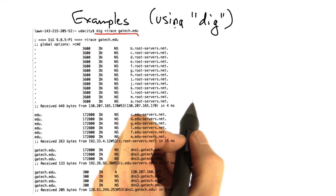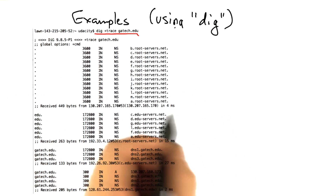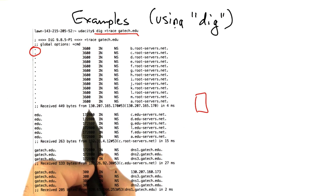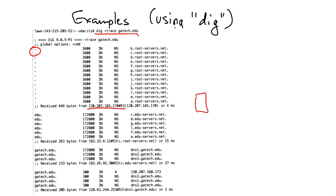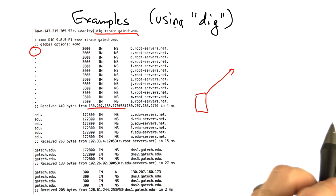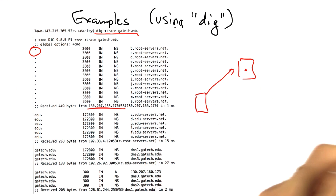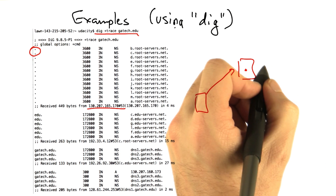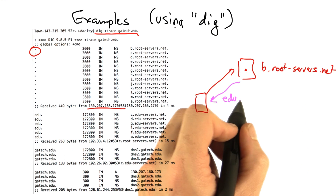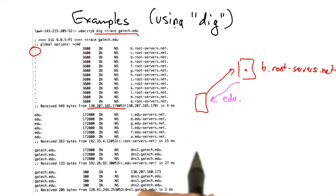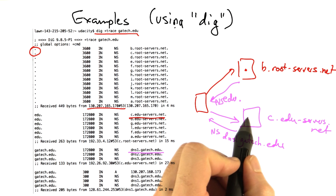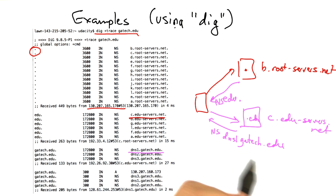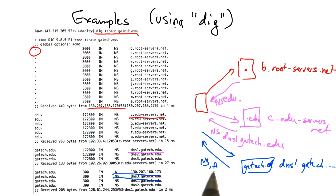Here you can see exactly what we saw before, which is the local resolver issuing a query to a local resolver and receiving a referral to an authoritative server for dot, which could be any of the following. That query elicits an answer for the dot edu servers, which subsequently issues a referral to the servers that are authoritative for gatech, which ultimately reply with the appropriate A records, as well as the authoritative name servers for gatech.edu.